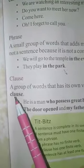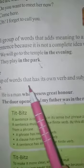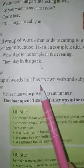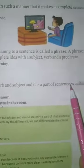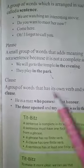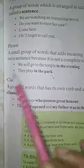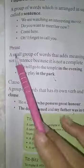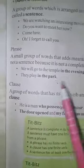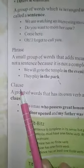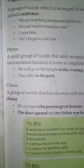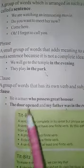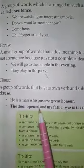Next, clause. A group of words that has its own verb and subject and it is a part of a sentence is called a clause. As you can see, it is just opposite of a phrase. A phrase does not have any subject and verb, but a clause has a subject and verb combination. You can see in the examples.